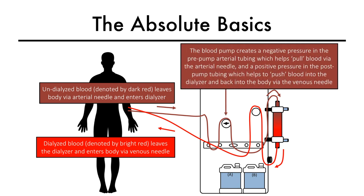The rotation of the blood pump creates a negative pressure in the pre-pump arterial tubing, which helps pull the blood via the arterial needle, and a positive pressure in the post-pump tubing, which helps push blood into the dialyzer and back into the body via the venous needle.